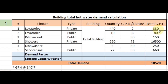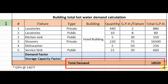Now we get the results. Total hot water demand: washbasin private — 880 GPH; washbasin public — 80 GPH; kitchen sink — 150 GPH; shower — 16,500 GPH; dishwasher — 250 GPH; service sink — 660 GPH. The total hot water demand for the complete building is 18,520 gallons per hour.